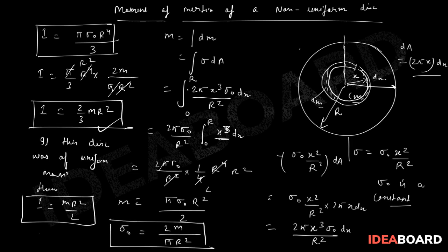Compare this with a uniform disc, where I equals Mr squared over 2. You can clearly see a significant deviation. I'm not asking you to memorize this answer, but you must remember the process — how to derive it — because this type of question can appear in your exam as a tricky problem at the NEET level. You should be able to work through it.